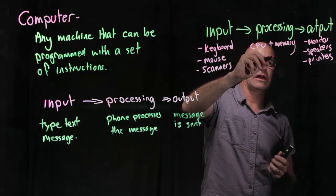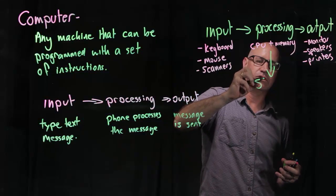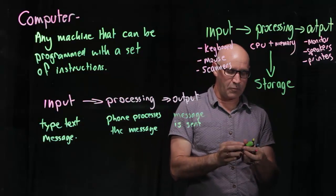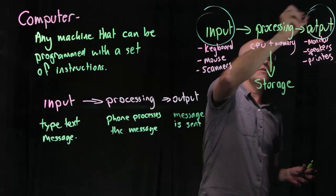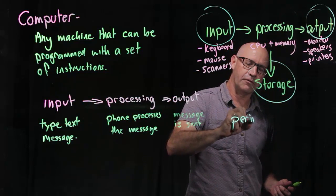And we also then have storage. So one way we can consider this is that our input devices, our output devices, and our storage are all what we call peripherals.